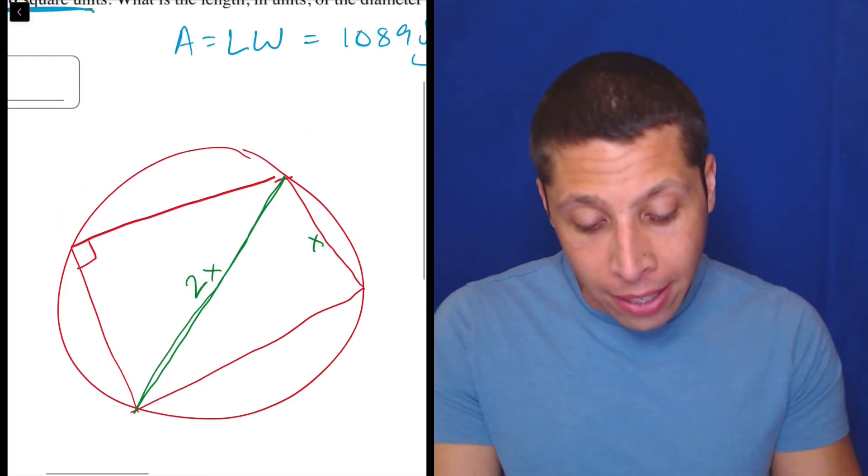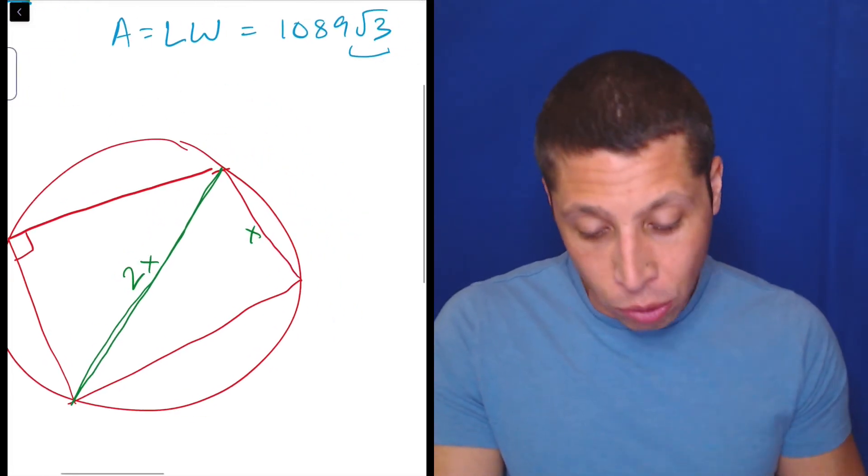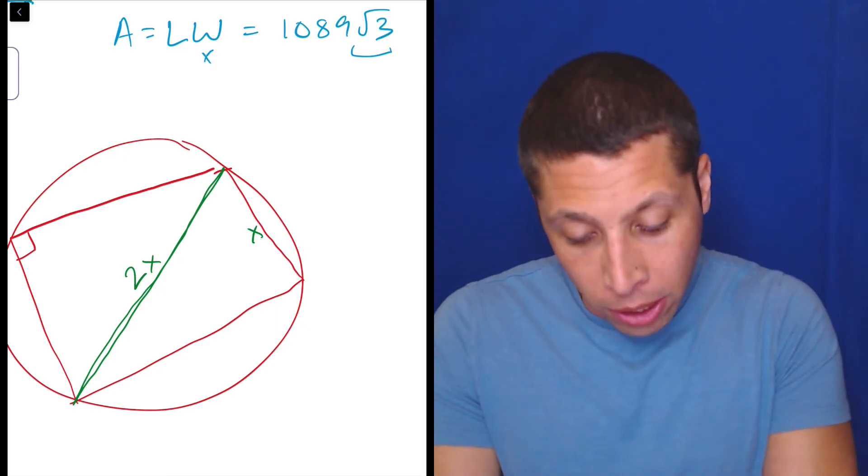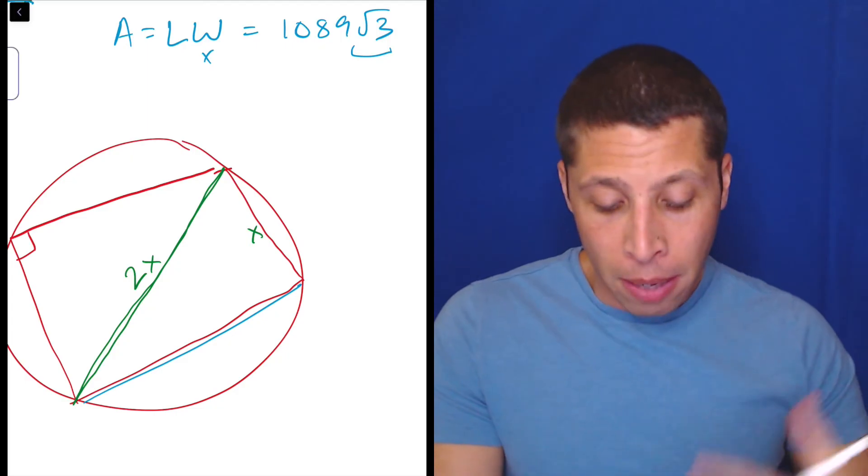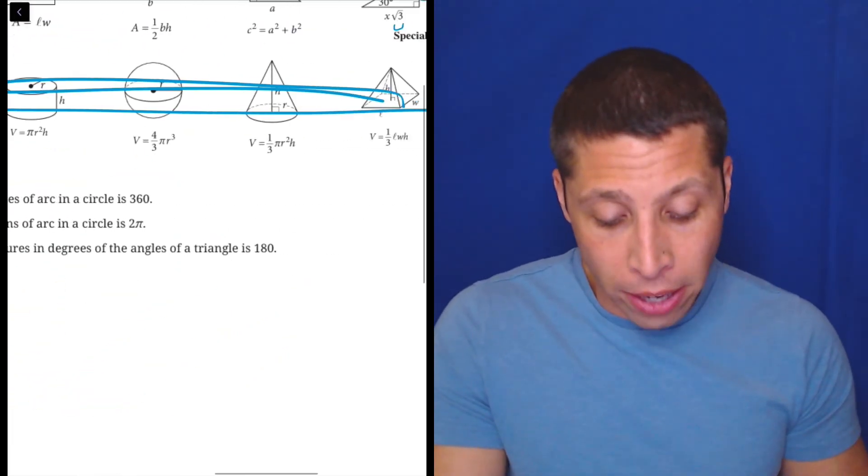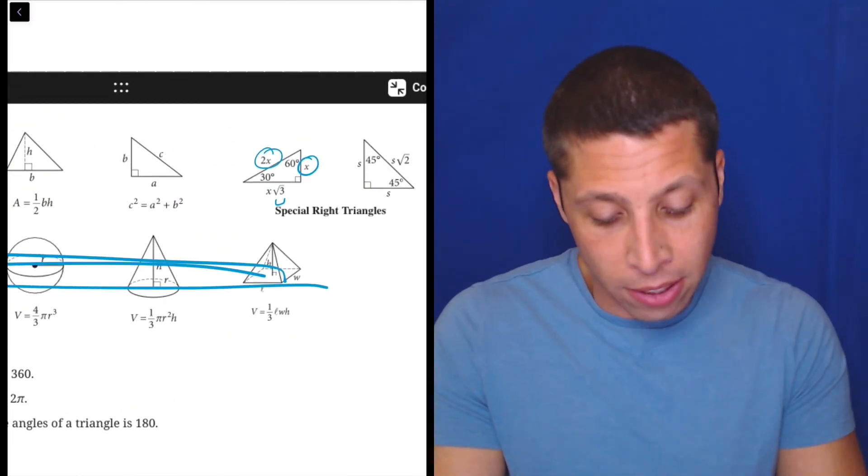Now, you could still find the width or length of this rectangle, right? Because we have the width we're going to call x. We could find the length by doing Pythagorean theorem. But that's going to take more time. It's much better to try to look for these kind of situations, right?